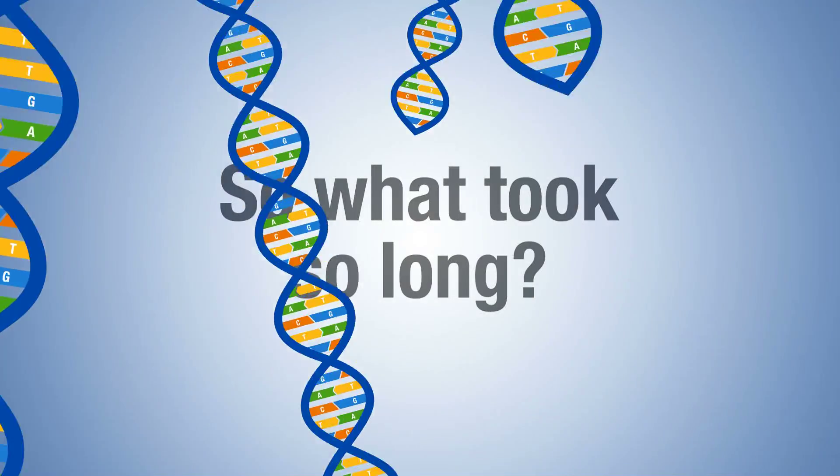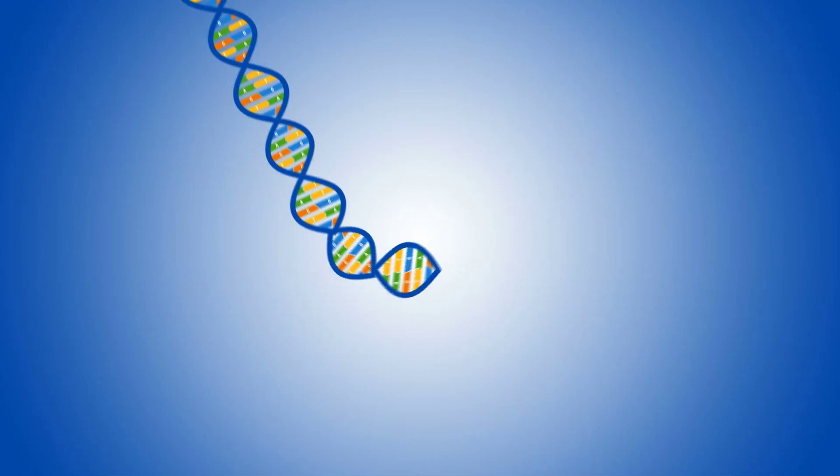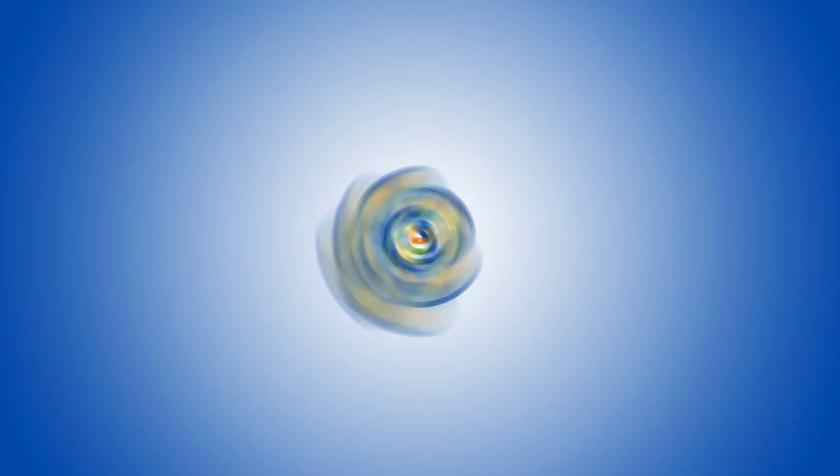So what took so long? There are 3 billion pairs of nucleotides in every human. That's enough data to fit into 12 dual-layer Blu-ray discs or 30,000 King James Bibles.